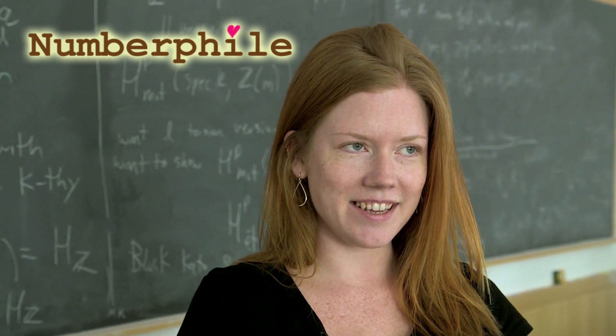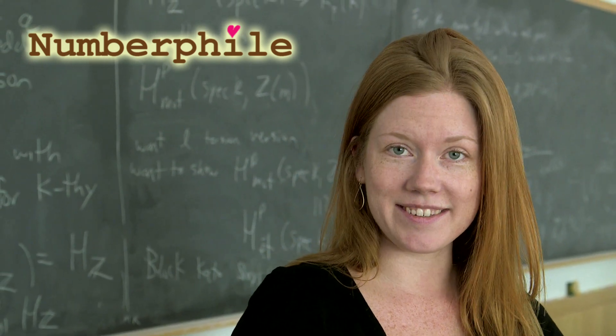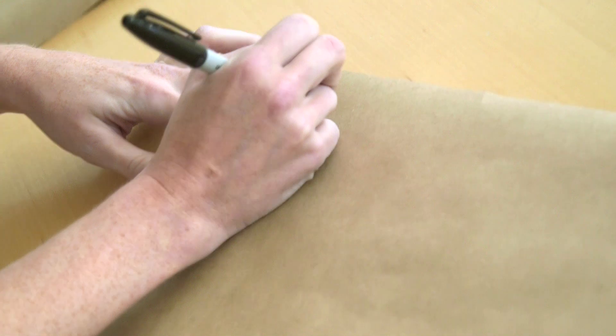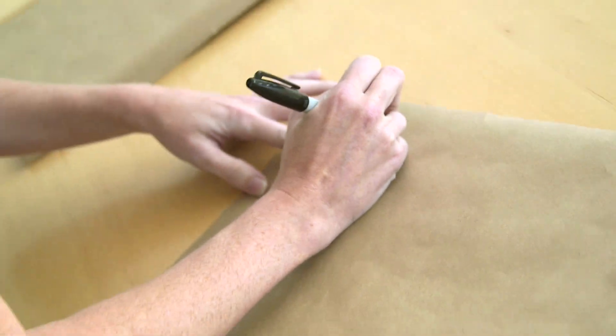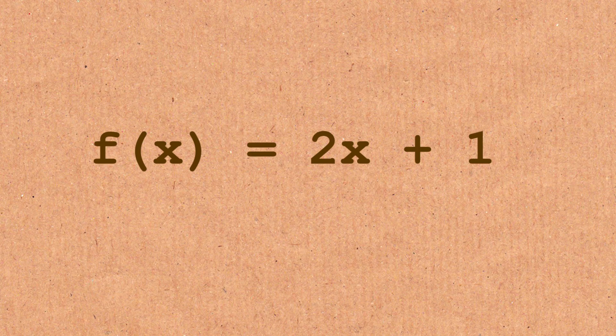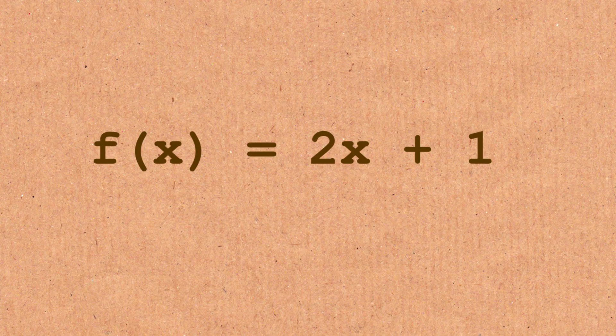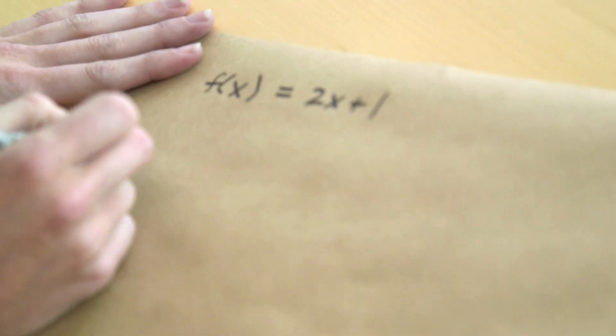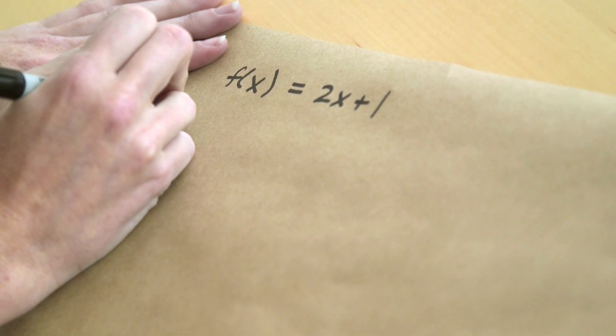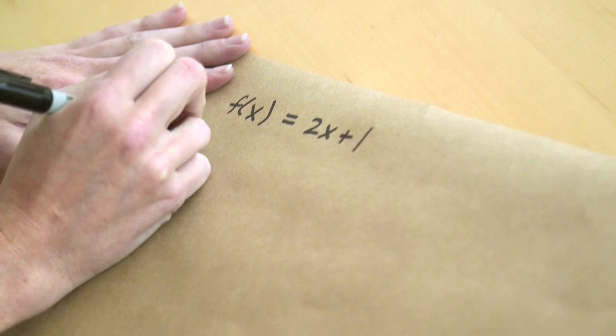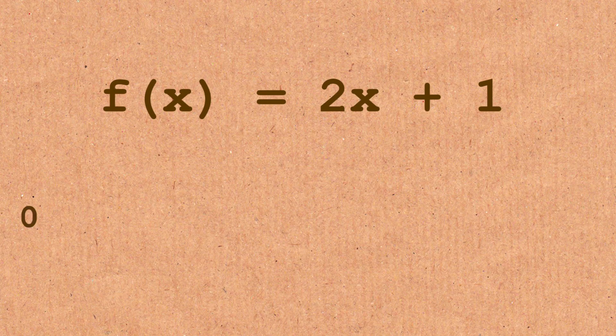So what we're going to try to talk about today is the arithmetic of dynamical sequences. Let's do an example. So here's an example maybe you'll recognize. Let's let f of x be the function 2x plus 1. And what I mean by iterating something under this function is let's start at a point, say x equals 0. When we plug x equals 0 into this function, we get 1. And then let's keep doing that.